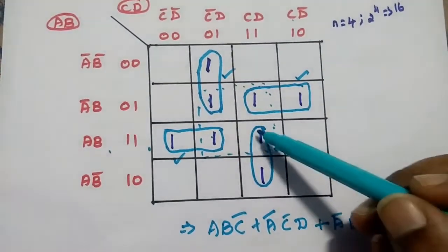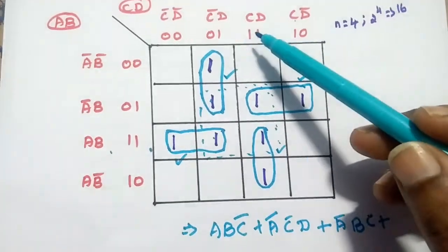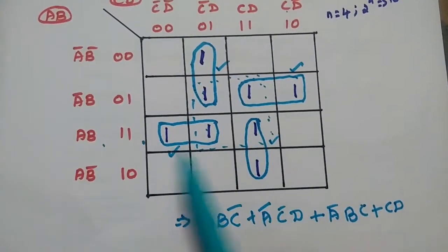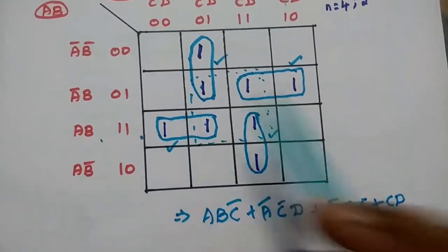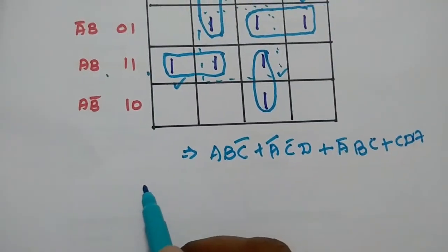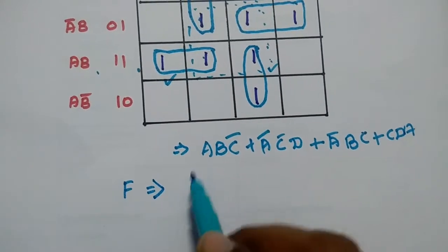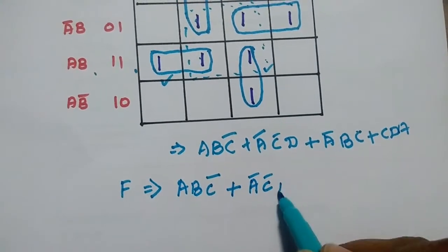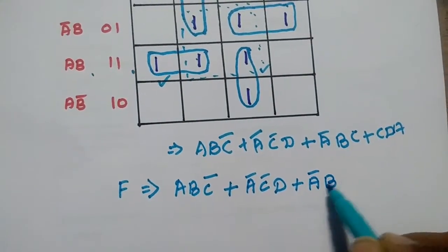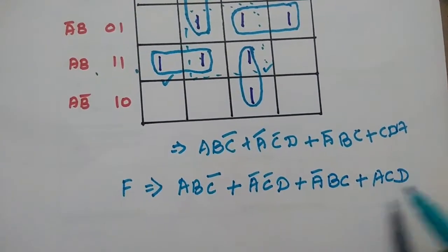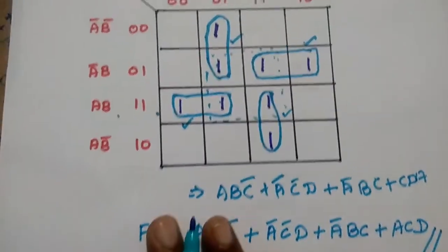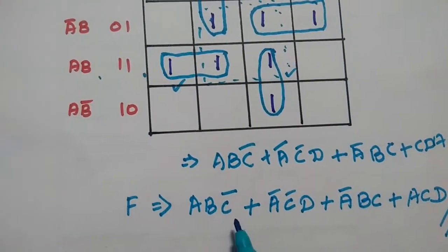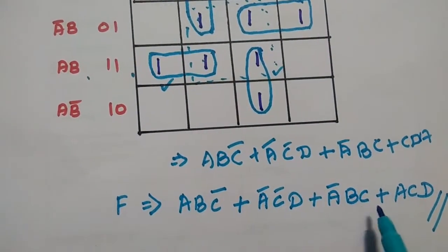For the last group, the common column variables are C and D. For the rows, A is the common term. So this group is written as ACD. Finally, summing all product terms, the given Boolean expression is simplified as F = ABC̄ + A̅C̄D + A̅BC + ACD. This is the final answer.